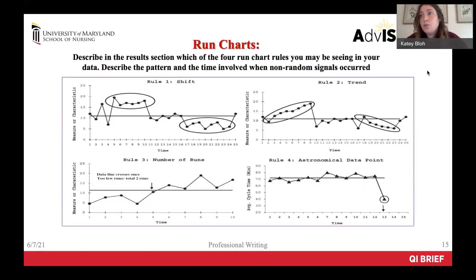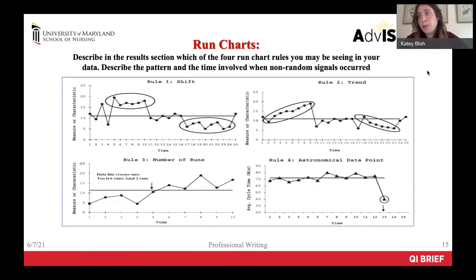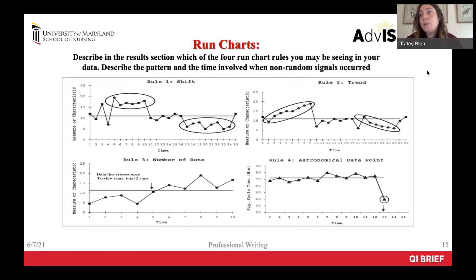In your results section, you should reference your run chart data. There is a separate QI brief on how to interpret your run chart data, so please take time to review that before creating and discussing your run charts. As a reminder, there are four rules for interpreting run charts. Rule one is used to determine whether you saw a shift. Rule two is used to determine whether you saw a trend. Rule three is to determine the number of runs you saw. Rule four is how you determine whether you saw an astronomical data point in your run chart. You should outline in your results section which of these four rules you may be seeing in your data.